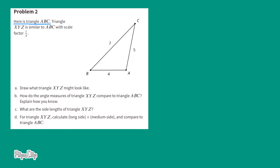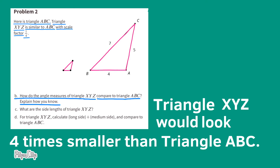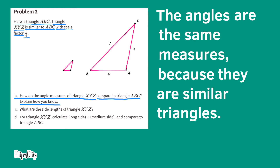Problem number 2. Here is triangle ABC. Triangle XYZ is similar to ABC with scale factor 1 fourth. Part A: Draw what triangle XYZ might look like. Triangle XYZ would look 4 times smaller than triangle ABC, so each side length for triangle XYZ would be 4 times shorter than each of the corresponding side lengths for triangle ABC.